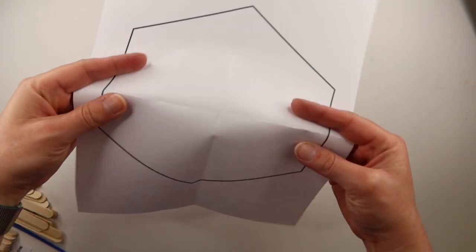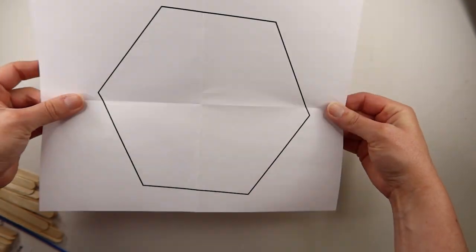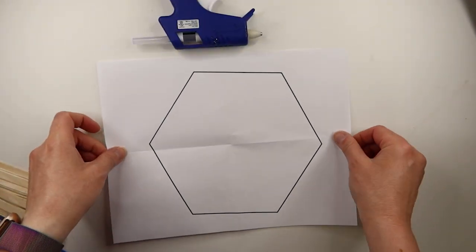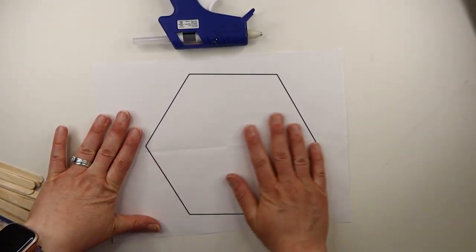First, plug in your hot glue gun and give it a few minutes to warm up. Next, unfold and flatten out the hexagon template from your kit. Place it on a flat, stable work surface.